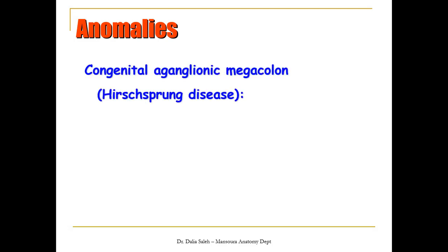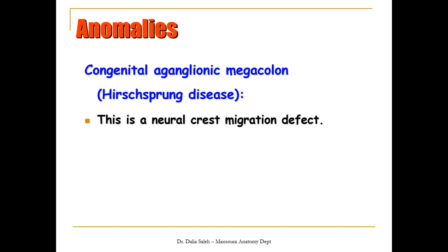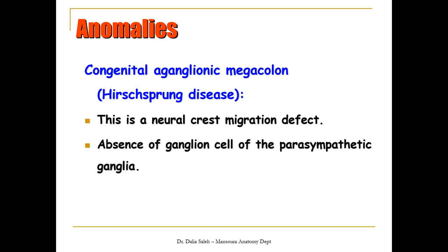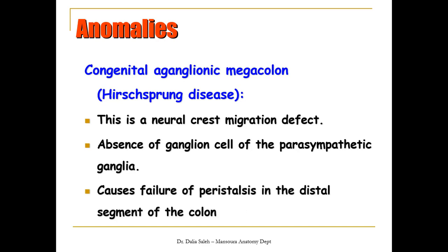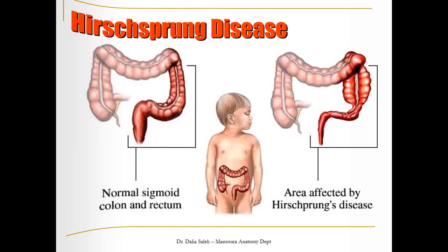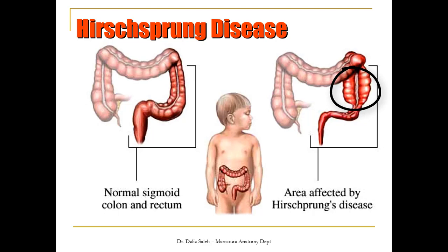For the anomalies of the hindgut, we have congenital aganglionic megacolon, also known as Hirschsprung's disease. This anomaly develops because of the lack of migration of neural crest cells, causing failure of peristaltic movement in the distal segment of the colon. The aganglionic segment will be narrow because of the lack of peristalsis, and proximal to this narrowing there will be distension of the colon.